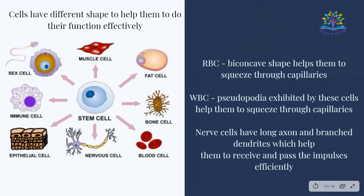Cells have different shapes to help them perform their functions effectively. RBC's biconcave shape helps them to squeeze through capillaries. WBCs exhibit pseudopodia which also help them to squeeze through capillaries. Nerve cells have long axons and branched dendrites which help them to receive and pass impulses efficiently.